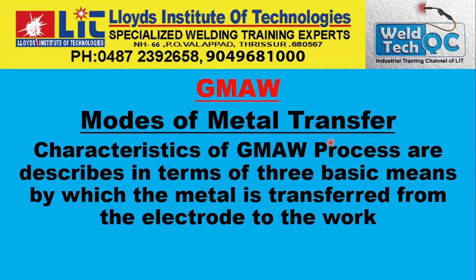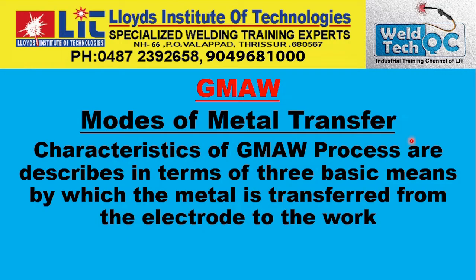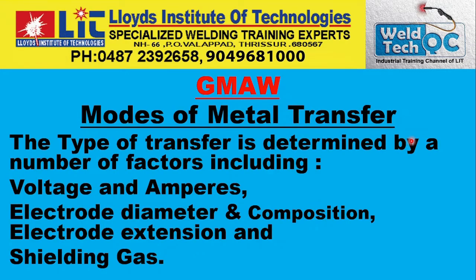Characteristics of the GMAW process are described in terms of three basic means by which the metal is transferred from the electrode to the work — these three modes of metal transfers. The type of transfer is determined by a number of factors including voltage, amperes, electrode diameter and composition, electrode extension, and even the shielding gases.